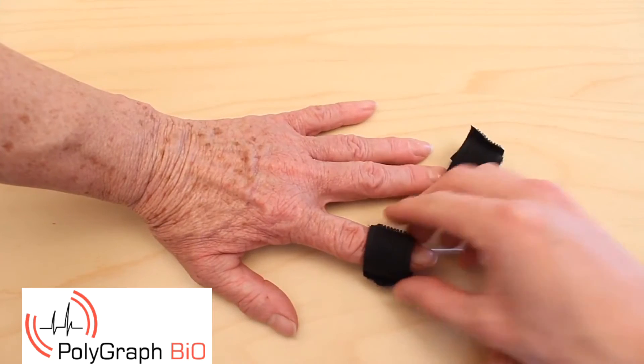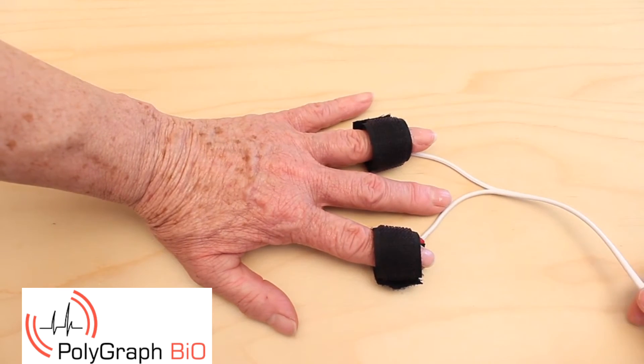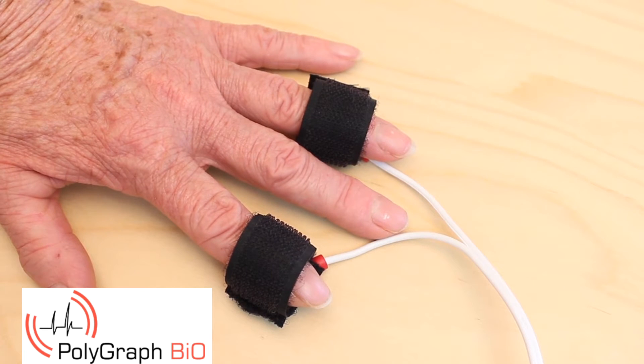Next, attach the two electrodes that measure the skin resistance to the middle and ring finger of the subject's left hand. With this instrument, the polygraph is capable of telling the amount of sweat the test subject is producing while answering your questions.